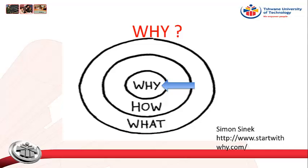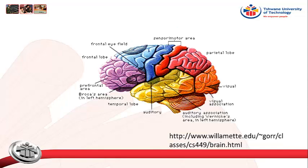Lecturers are therefore here to teach in ways that are pioneering and transformative, and students are here to learn. But how does this take place? What we need to realize is that without a brain, a human cannot learn, gain knowledge, acquire competencies, transform and become enterprising. If the brain is our core business, we need to realize that we are in the brain business. Teaching at TUT is therefore creating the best possible environment for the brains of students so that they can learn, gain knowledge, acquire competencies, transform and become enterprising.